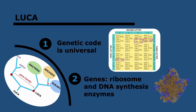Now onto LUCA — the last universal common ancestor. This is the idea that all living organisms, including animals, plants, bacteria, and everything else, come from the same ancestor — essentially the idea of evolution. This does not mean LUCA was the first organism to ever exist; it's likely that there were other organisms that just went extinct, like the dinosaurs. LUCA would have been the most recent common ancestor, which is where the name comes from.